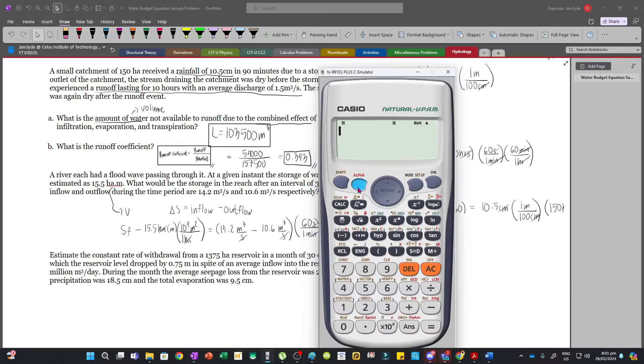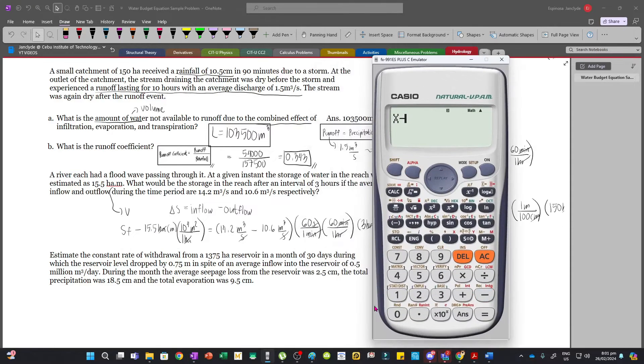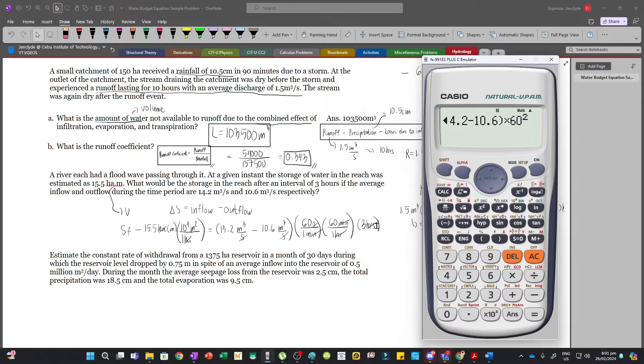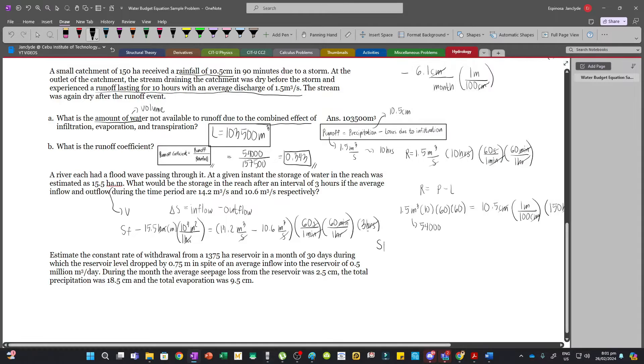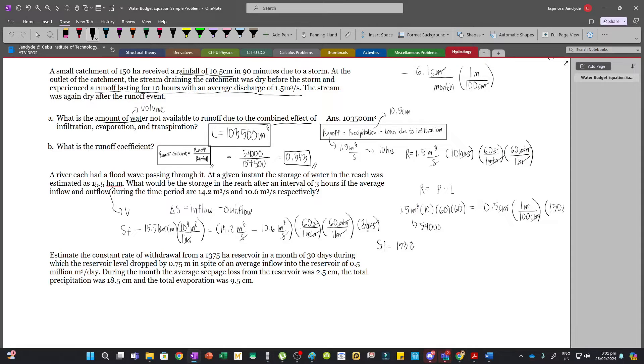And so we have s_f minus 15.5 times 10 to the 4th that's equal to 14.2 minus 10.6 times 60 squared multiplied by 3 and so that'll be 193,880. So s_f equals 193,880 and then this is m cubed.